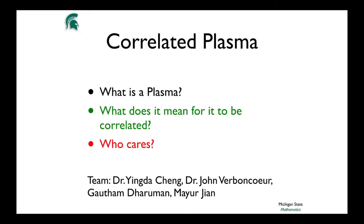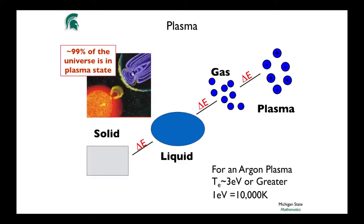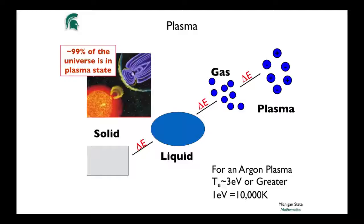What is a plasma? You start with a solid, add energy, and it melts into a liquid. Heat it more and it evaporates into a gas. Add even more energy and the gas molecules themselves break down and separate — you end up with ions and electrons, charged particles floating around as a gas. That's a plasma. Physicists like to refer to it as the fourth state of matter. It's 99% of the visible universe — when you look at the night sky, 99% of what you see is in the plasma state.